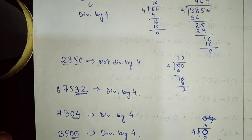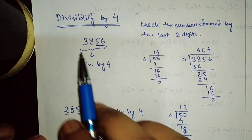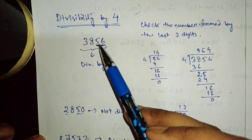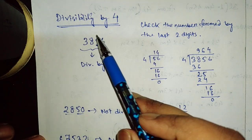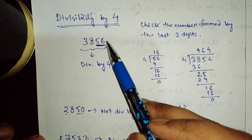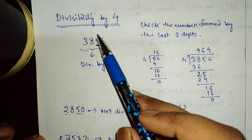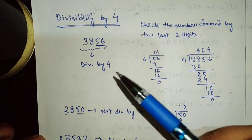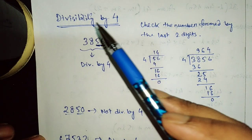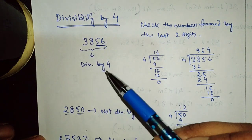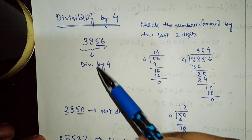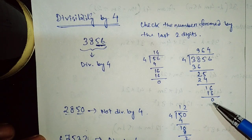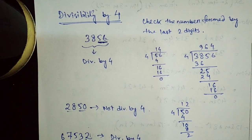So, in order to check divisibility by 4, we just have to check the number formed by the last two digits. If the number formed by the last two digits is divisible by 4, then the whole number is divisible by 4 — that means we get remainder 0 when dividing the whole number by 4.